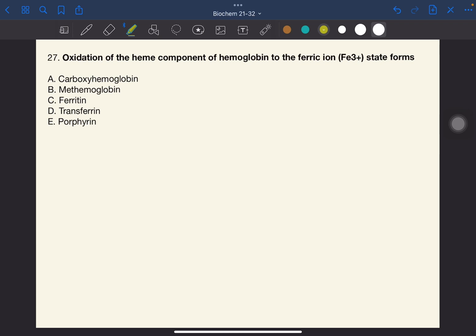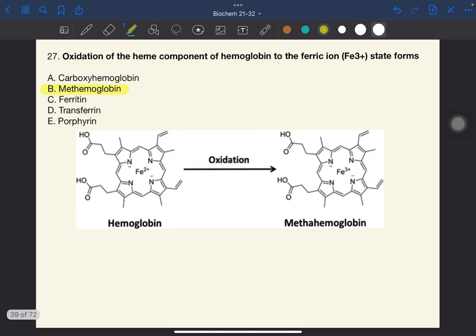The answer to this one is B, methemoglobin. Normally, the heme component in hemoglobin is in the ferrous state, Fe2+. However, when it's oxidized, it becomes ferric. And when the heme component becomes ferric state, it cannot bind oxygen. This is now methemoglobin. And if you recall from Toxicology, we treat this with methylene blue because this reduces ferric to ferrous.